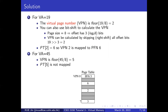Starting with virtual address 19: we need to find which virtual page contains this address. Because each page is 8 bytes, the first virtual page covers addresses 0 to 7, the second covers 8 to 15, and the third covers 16 to 23. Virtual address 19 falls in the third virtual page — we can calculate this by dividing 19 by the page size and taking the floor, which gives 2. Numbered from 0, that is the third entry.